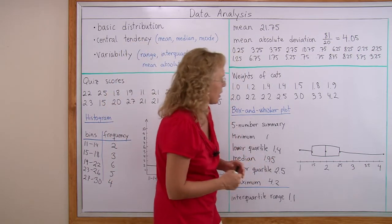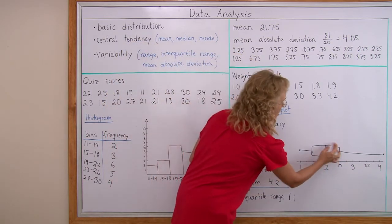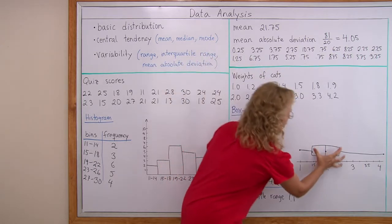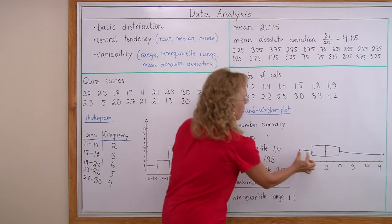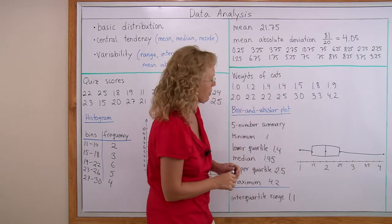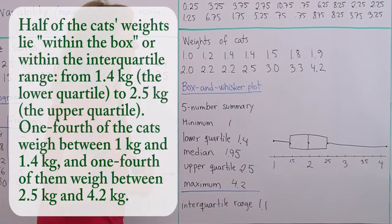From it we can see that half of the data, the middle half of the data is here, within the box. And then one fourth of the data is here, and one fourth of the data is here. I want to explain this a little bit more.